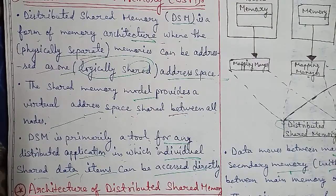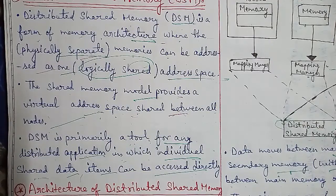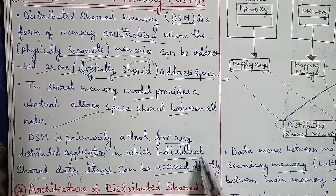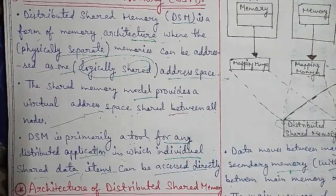However, an underlying runtime system ensures transparency, so that processes executing at different computers can observe updates made by one another. Although processes appear to access a single shared memory, in fact the physical memory is distributed.